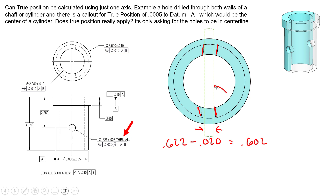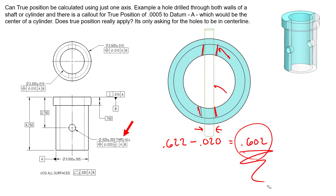The virtual condition is calculated as MMC minus the geometric tolerance: 0.622 − 0.020 = 0.602. This 0.602 diameter boundary is a worst-case boundary that neither cylindrical surface will ever cross. If a mating part needs to assemble through here, we know a 0.602 boundary is always available — the mating part will never contact these surfaces within that boundary. We can use this to calculate fits and allowable deviations for mating parts. Keep 0.602 in mind as we move to Option 2.